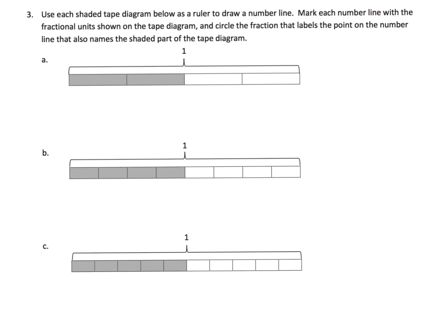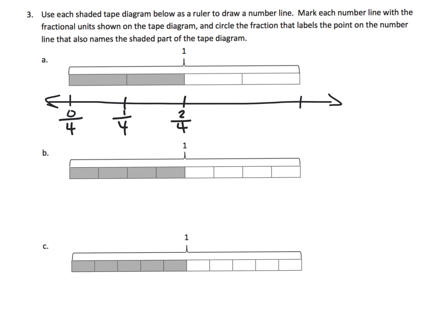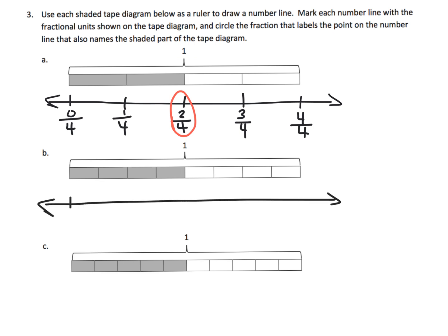This next slide is exactly the same concept, but now they want us to create the number line. Zero is here, and this is one whole. Everything has been cut into four pieces, so this is zero-fourths, one-fourth, two-fourths, three-fourths, and four-fourths. The shaded part is two-fourths. The next tape diagram has been cut into eight pieces, so each piece is an eighth: one-eighth through eight-eighths.